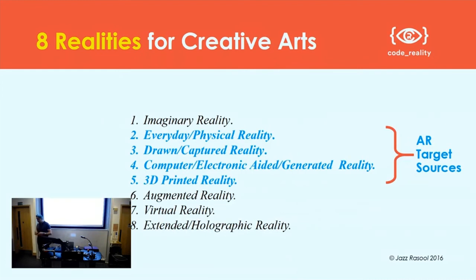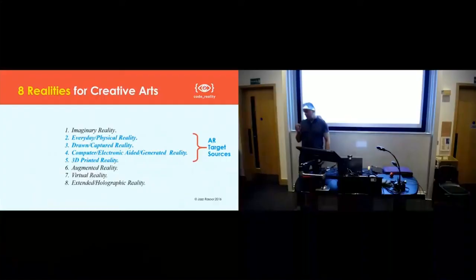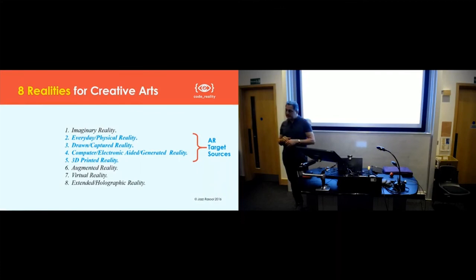Most augmented reality targets — the sources of them — you're going to find in everyday physical reality. They could be a sketch, a captured reality like a photograph, a 3D scan, or even a video. They could be something generated inside a computer, like a CAD model, or something that's physically been printed from a computer. Those realities are typically where you'll find the targets that are going to be the source of augmented reality experiences.